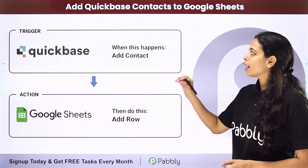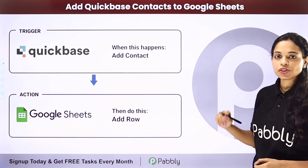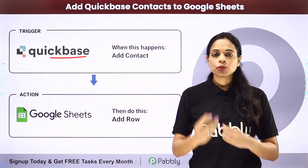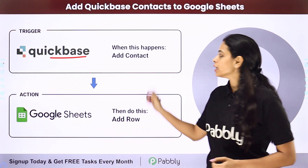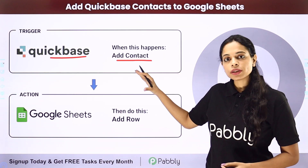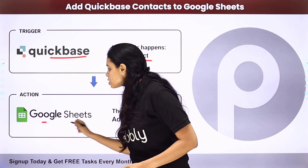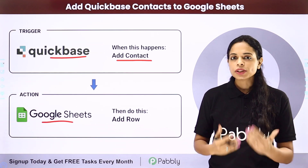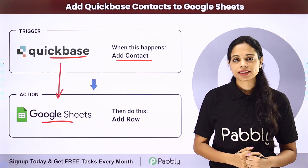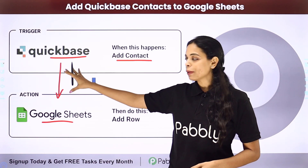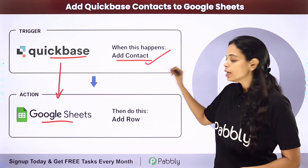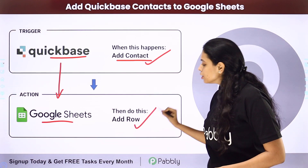In this video, we are going to see how to add Quickbase contacts to Google Sheets. So let's say you are using Quickbase as a cloud-based software where you can create custom applications, and every time a contact is added, you want the details of that contact to also be added to your spreadsheet in Google Sheets. Your trigger application would be Quickbase and your action application would be Google Sheets, so every time a contact is added, the details would be added as a new row in your spreadsheet.